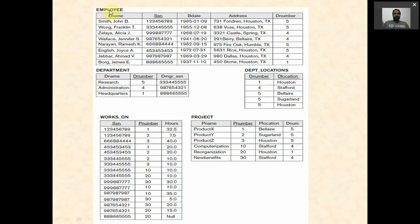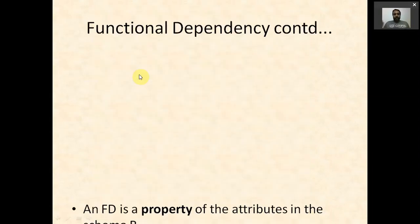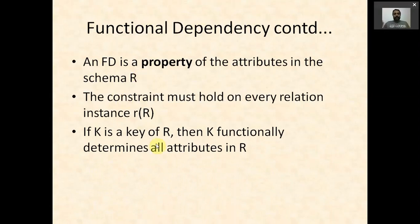Another important property: if K is the key of relation R, then K functionally determines all attributes in R, and all attributes are functionally dependent on the key. In the employee table, SSN is the key, so Ename, birthdate, address, and DNumber are all functionally dependent on SSN. In the department table, DNumber is the key, so DName and DManagerSSN are functionally dependent on DNumber.